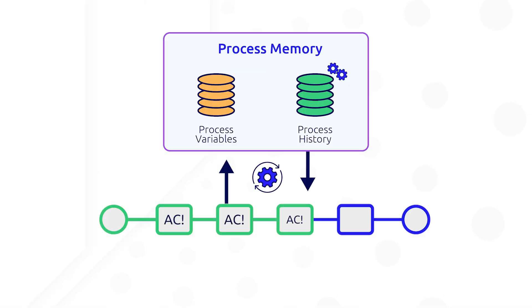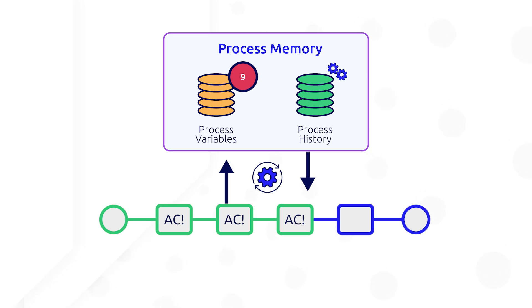Using activity class parameters to hold and manipulate data can also be a great way to reduce the number of process variables. For example, transforming data returned from an API.